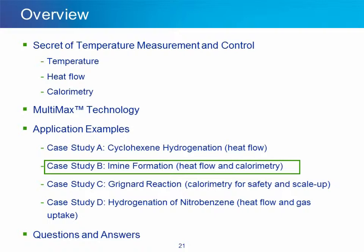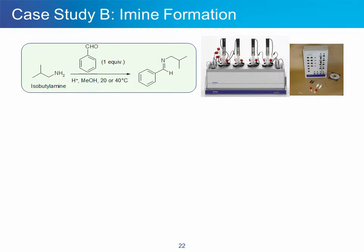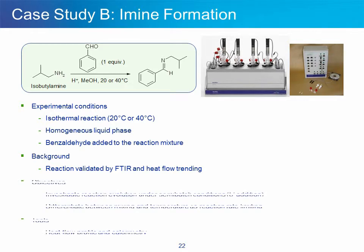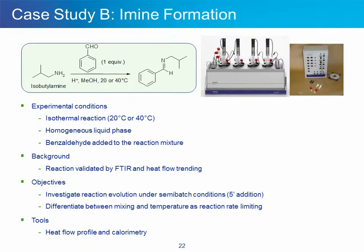The next case study is the formation of an imine. The study was conducted using a 4 by 50 mL vessel system with glass vessels and specific equipment required for calorimetry. Benzaldehyde was added to isobutylamine in the presence of an acid catalyst and methanol as a solvent. The reaction temperature was either 20 degrees or 40 degrees. The reaction mixture was liquid and completely homogeneous. The chemistry was preliminarily validated in a batch mode using mid-infrared and heat flow training. A second study was then decided to look at the reaction under semi-batch conditions using heat flow training and calorimetry.